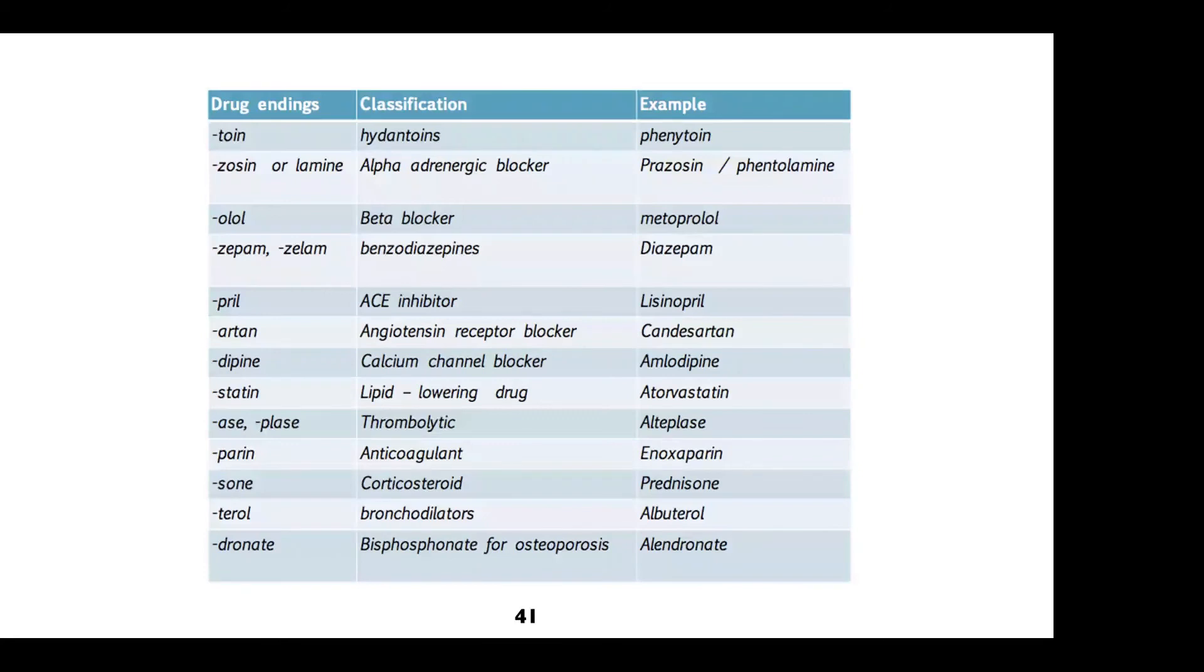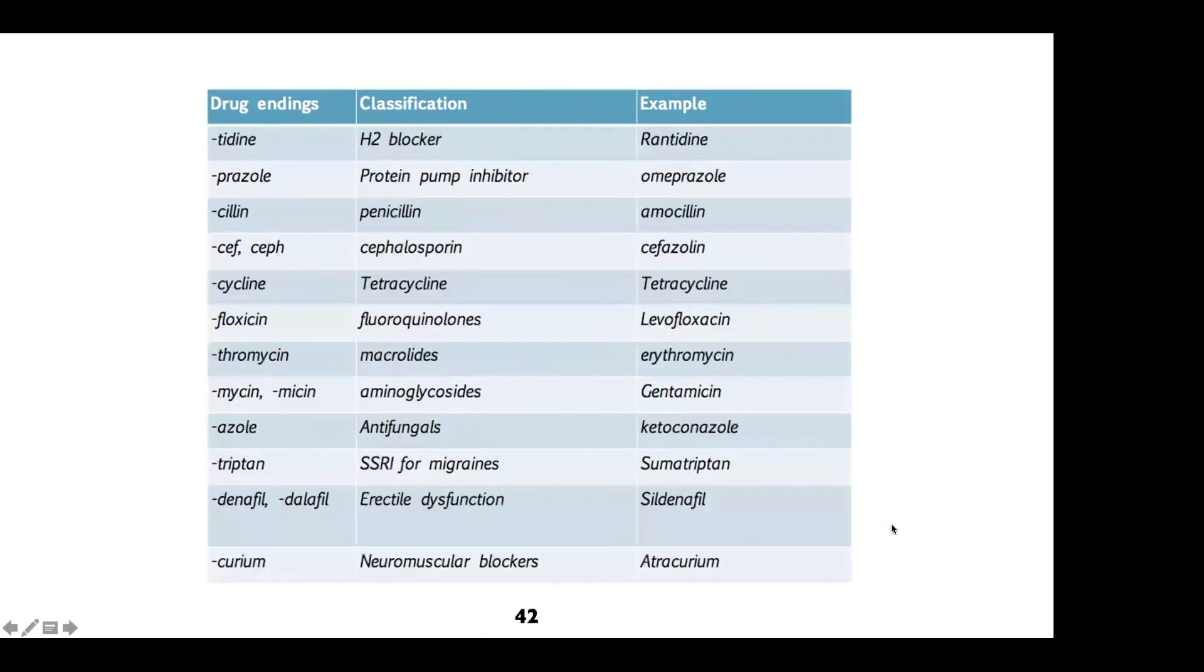There's budesonide. So all drugs that end in O-N-E or I-D are steroids. Drugs typically ending in tidine or prazole. Tidine, H2 blockers like ranitidine. Prazole, PPIs like omeprazole. So what are those drugs used for? What conditions come to mind for those drugs? Good. GERD, PUD, peptic ulcer disease.